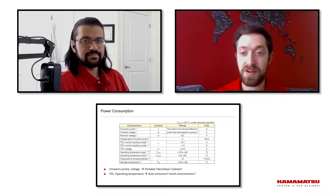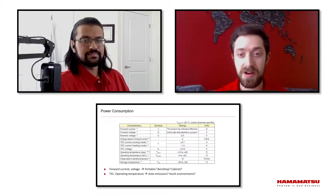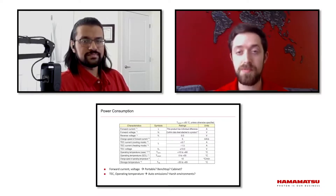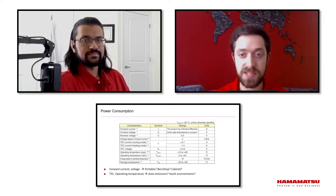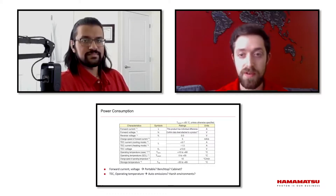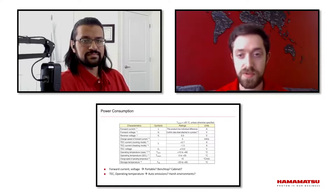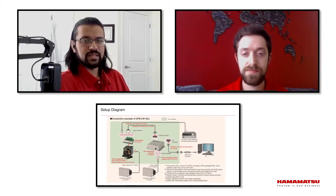Line width is also a key specification — the laser is going to achieve a certain line width, and the tighter the line width, the better. And of course, with all light sources, there's power consumption. Unfortunately, quantum cascade lasers do require a fair amount of power, so this is also something very important to consider.